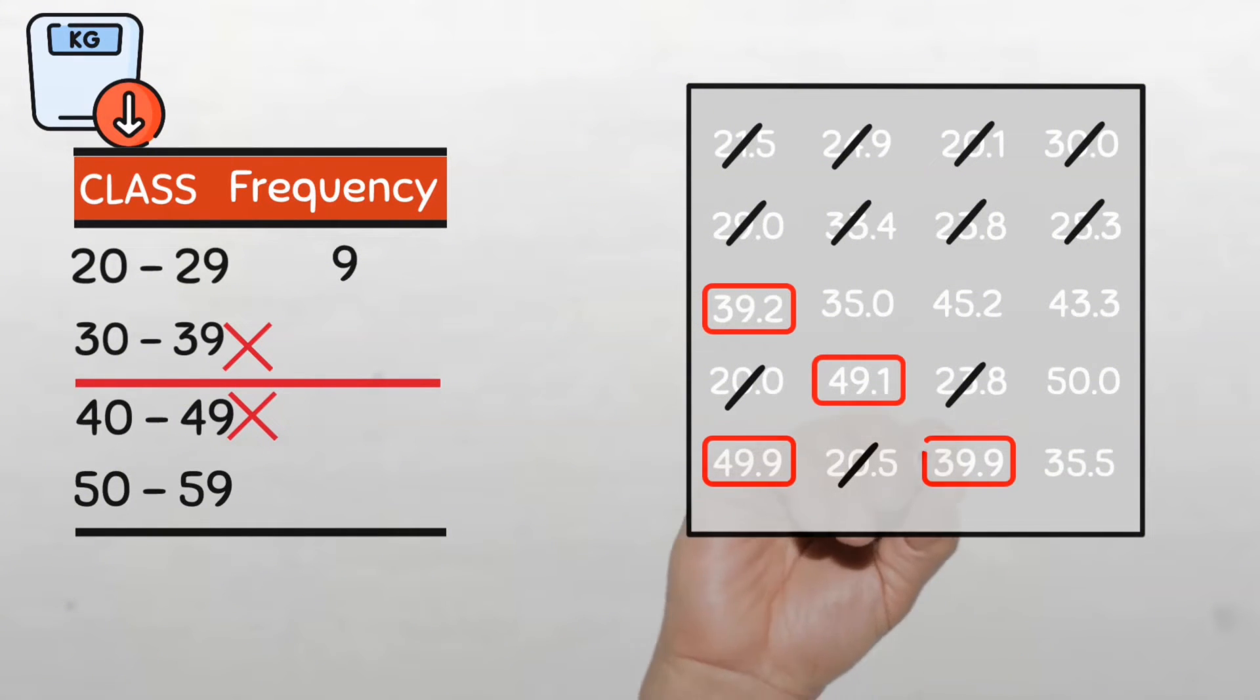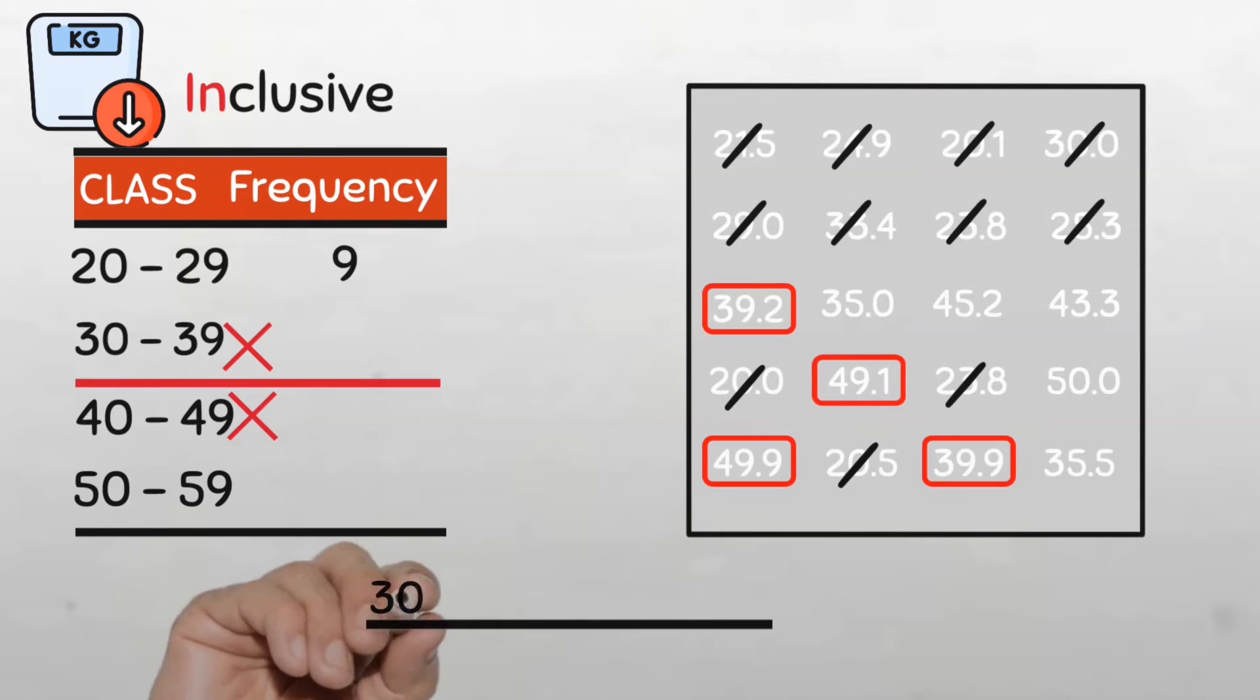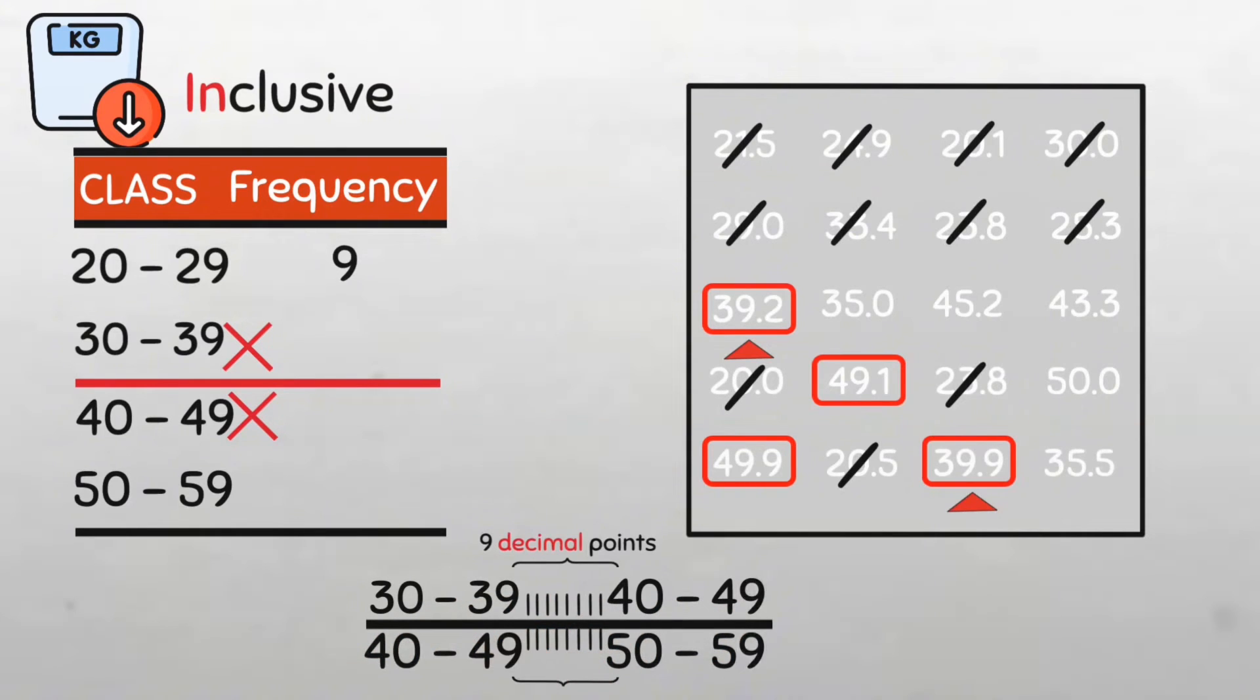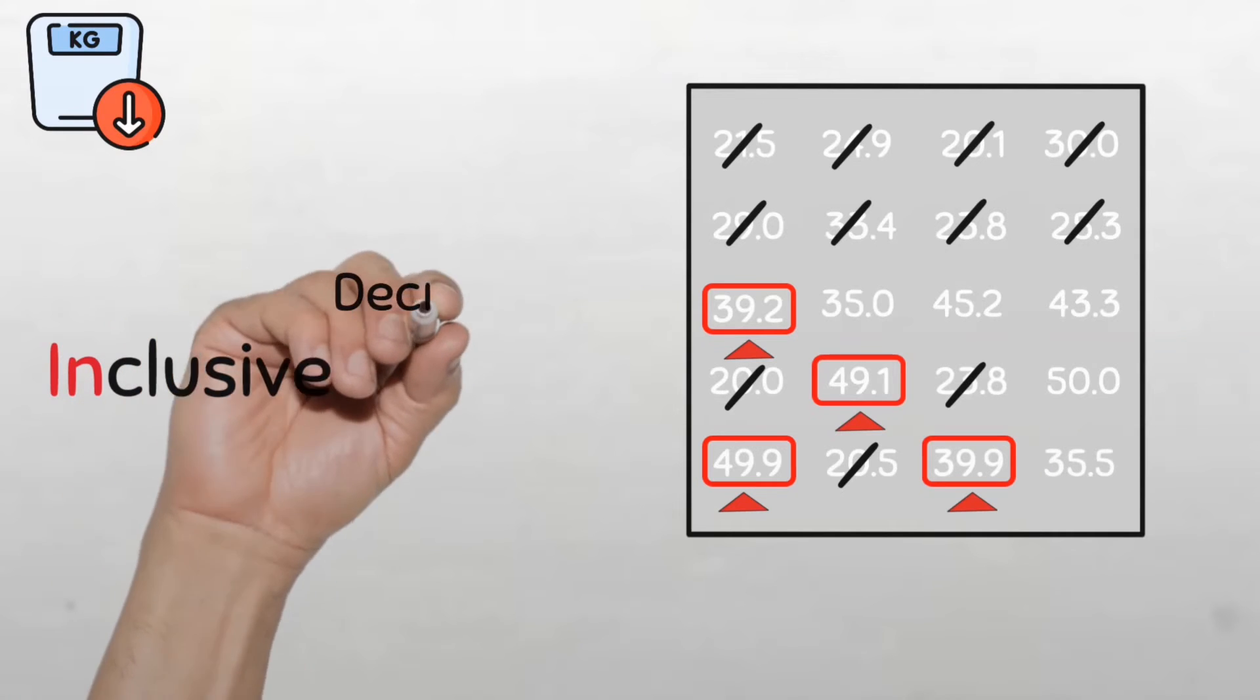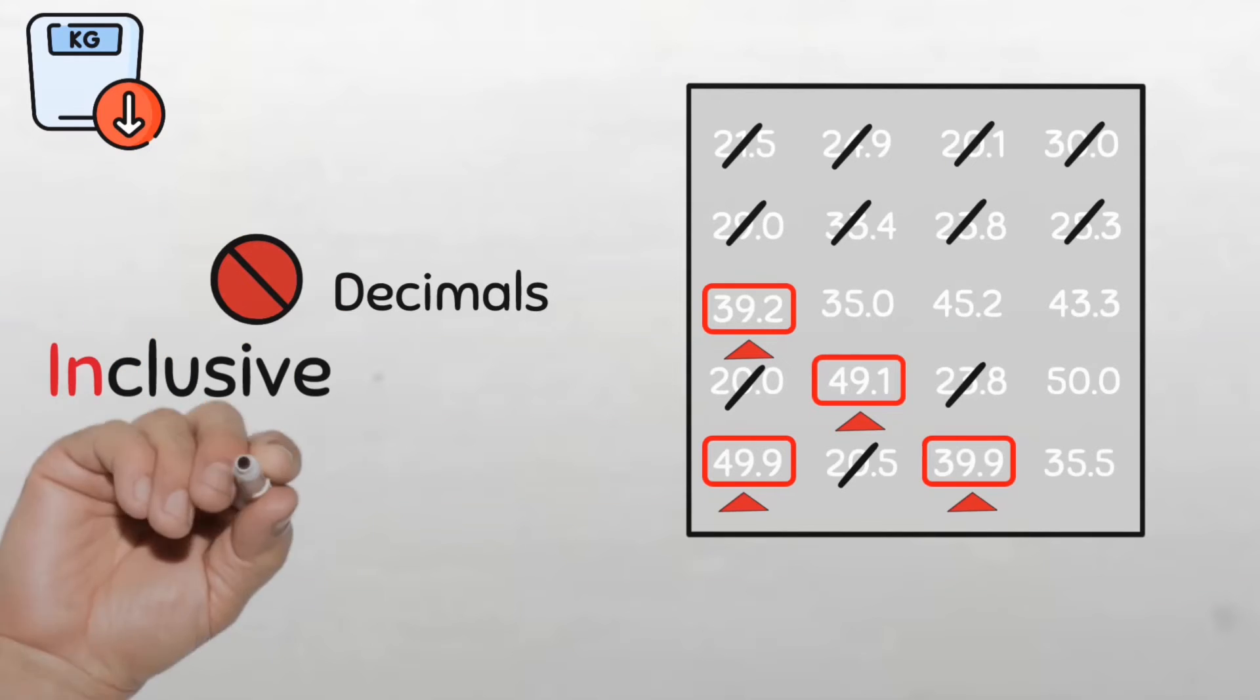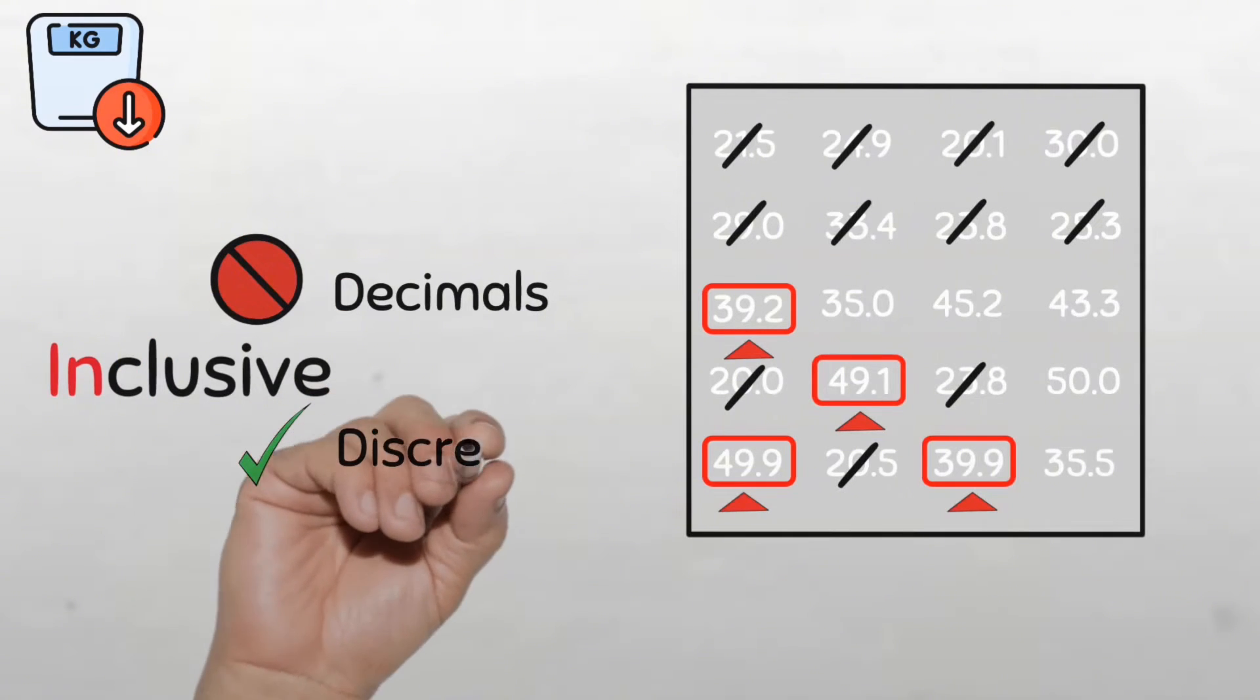We will not be able to account for these data values if we use the inclusive type of classification, because there are gaps between each class that are not accounted for with inclusive type. Between the 30 to 39 class and the 40 to 49 class, there's a gap of 9 decimal points where these two data values should fall. And the same for between 40 to 49 and 50 to 59 class where there's a gap in which these other two data points fall.